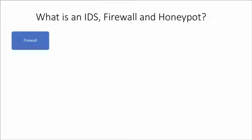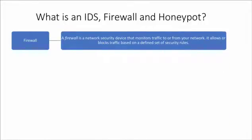A firewall is a network security device that monitors traffic to or from your network. It allows or blocks traffic based on a defined set of security rules. It's basically a device or piece of software that usually sits on the perimeter of a network and creates a boundary between the trusted network and the untrusted network. It accomplishes this by a set of security rules — it opens and blocks ports, looks at packets flowing through its interfaces, and looks for malicious traffic or specific rules that it then blocks or allows.